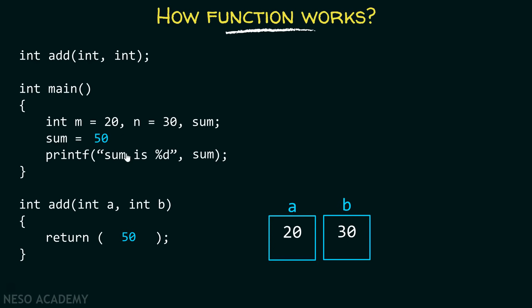After that, we simply print sum, which is 50. This is just a placeholder, and this placeholder will get replaced by the value 50. So "sum is 50" will get printed on the screen. This is the way how a function works.